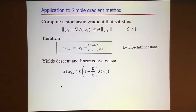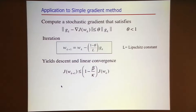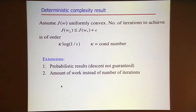If at every iteration I'm able to satisfy this inequality, then I'm going to be able to decrease the objective function at every iteration, get a linear rate of convergence, and build a complexity result. In particular, for a uniformly convex function, the number of iterations to get an epsilon-accurate solution is going to look like 1 over epsilon. But this is not possible in practice—nobody is going to tell me if my stochastic gradient satisfies a certain condition with respect to the true gradient.